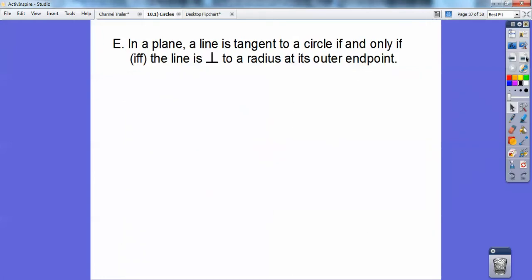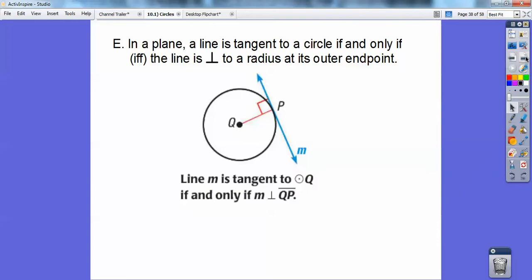In a plane, if a line is tangent to a circle, if and only if the line is perpendicular to the radius at its outer end point. This is what it says right here. This line is tangent to this circle if it makes a right angle out here. So the code word is tangent means right angles.